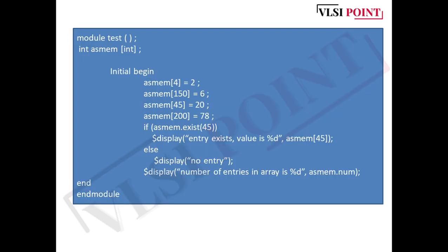Let's discuss this example: module test, int asmem[int]. This asmem is associative memory and the key is integer here. Initial begin, we have assigned some values to this associative memory. asmem[4] = 2, asmem[150] = 6, asmem[45] = 20 and asmem[200] = 78. We have assigned different values to these elements like 4th, 150th, 45th and 200. Then we have if (asmem.exists(45)). We are checking whether this entry 45 exists or not. If it exists then this line will be printed: "Entry exists, value is %d", asmem[45]. If this entry does not exist then it will display no entry. The next $display command is number of entries in array.